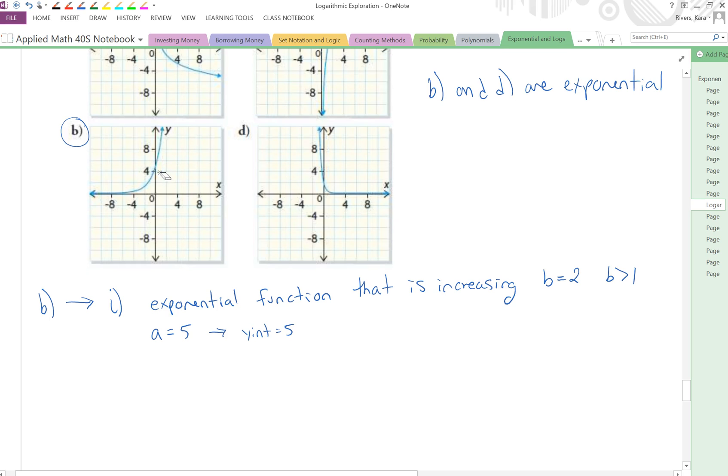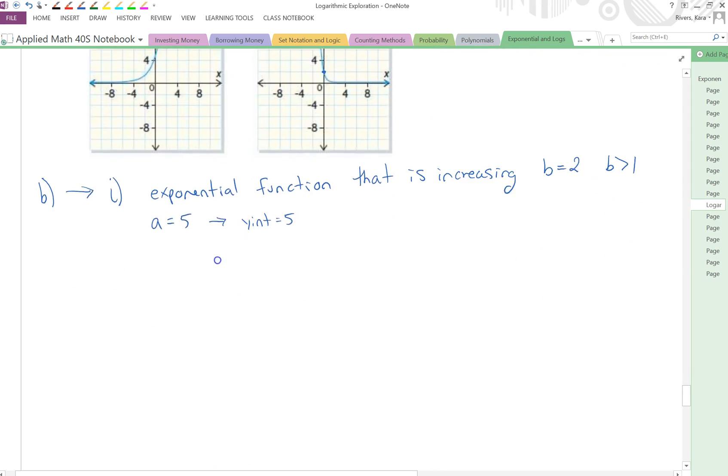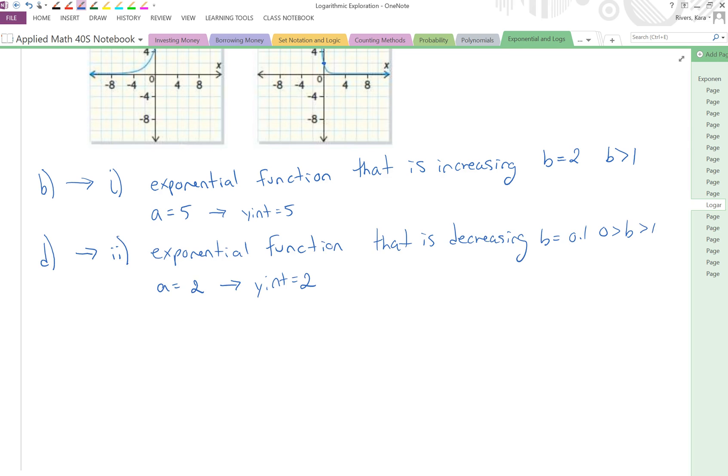Let's go back and do equation 2. Well, equation 2 is also exponential, but it's a decreasing function because B is between 0 and 1. Your A value is 2. And if we look at our other exponential function that crosses the x-axis, that would be equation D. You can see that, in fact, your y-intercept is 2. So let's write that out.